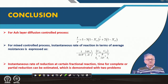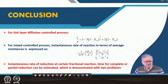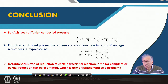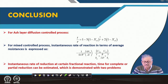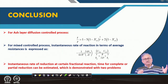In conclusion, for ash layer diffusion controlled processes, the dimensionless time to fractional extraction relationship is: t/τ = 1 − 3(1−x_B)^(2/3) + 2(1−x_B). For mixed control, the instantaneous rate in terms of average resistance is: rate = (C_Ag − C_Ae)/(1/k_g + r/(2D) + 3/k_s), where r/(2D) is the average ash layer resistance, 3/k_s is the average resistance at the unreacted core interface due to chemical reaction, and 1/k_g is the average film resistance. Instantaneous rates and times for complete or partial reduction can be estimated using these formulas.